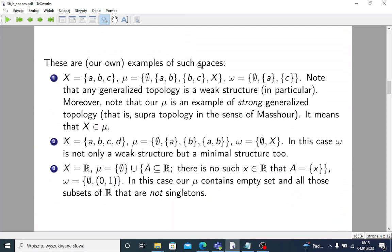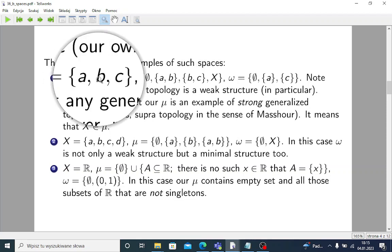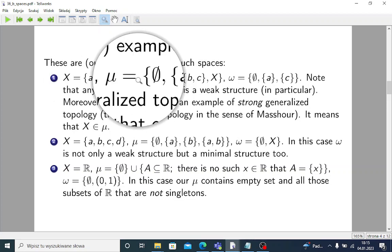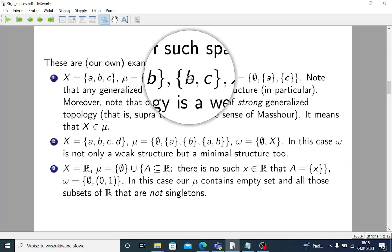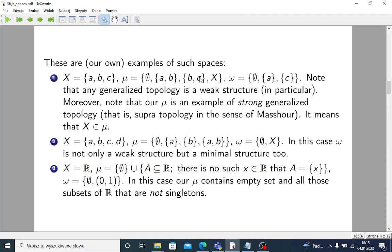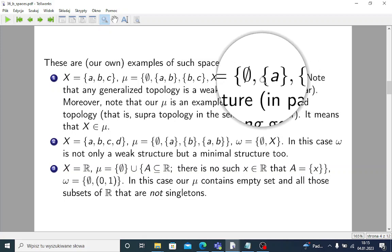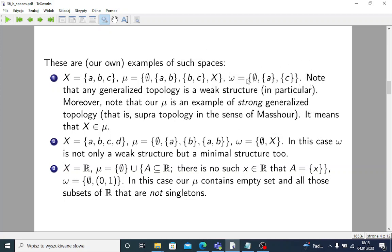These are our own examples of such spaces - our own because the paper lacks examples. You can analyze them. For example, here we have very simple finite universe ABC. We have some generalized topology. It's closed under unions. It's not closed under intersections, as you can see.